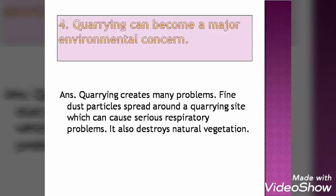The fourth reason: quarrying can become a major environmental concern. Quarrying is a type of mining done to extract minerals. When minerals are extracted, the land becomes weak and can lead to landslides. Also, when quarrying is done, a lot of dust particles come out and spread in the area. The miners especially suffer from different respiratory diseases — many breathing problems because of the dust coming from inside the earth. It also affects vegetation, making it another concern for the environment.